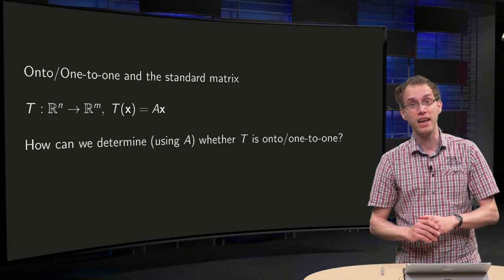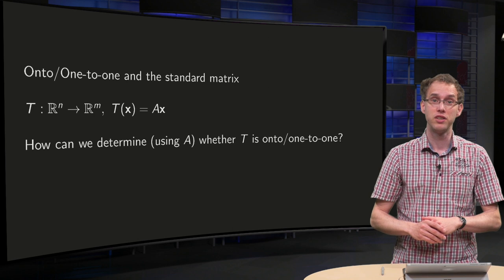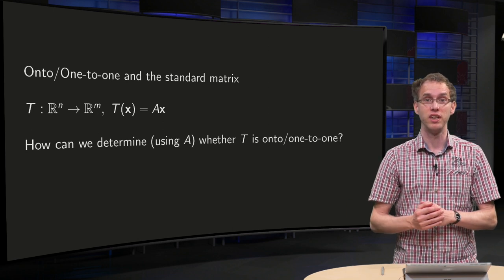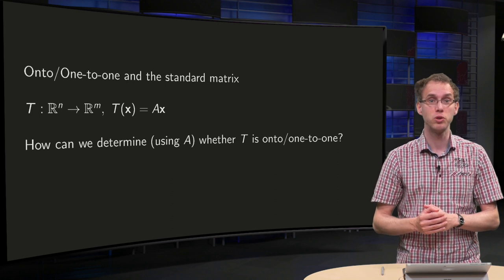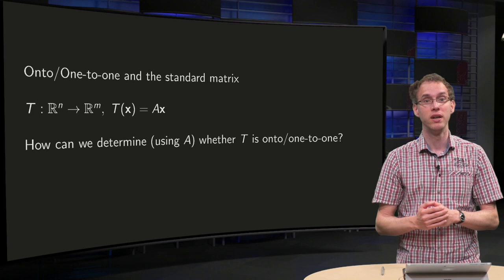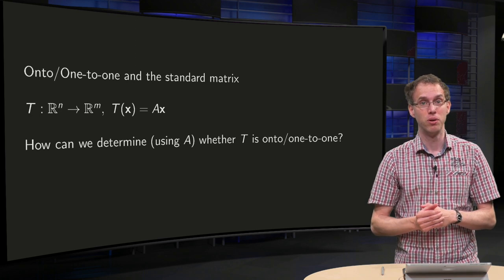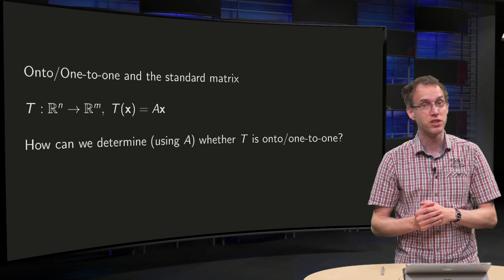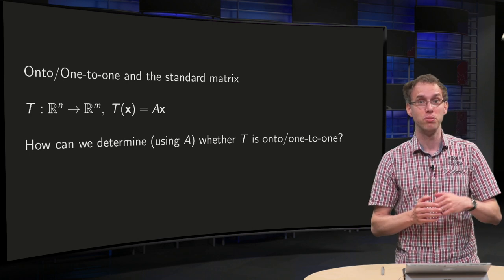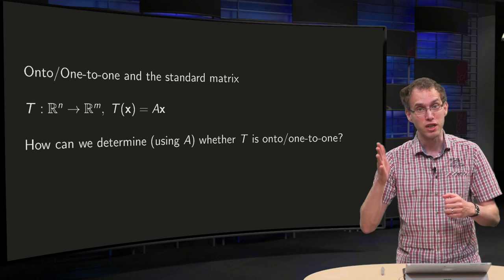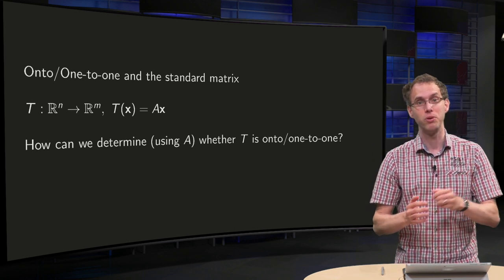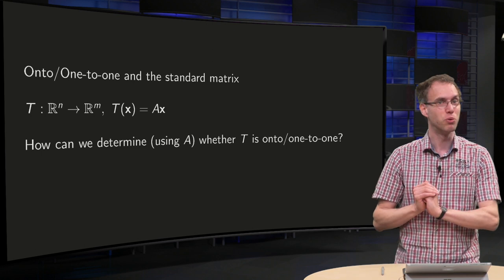The number of solutions of AX equals B is related to the question whether the matrix equation T(X) equals AX is one-to-one or onto. While this number of solutions depends, for general B, on the matrix A as you know, more specifically on the number of pivots. So this means that the pivots of the matrix A should be able to tell us whether the transformation T is one-to-one or onto. But how do they tell us this? That's what you will learn in this video.